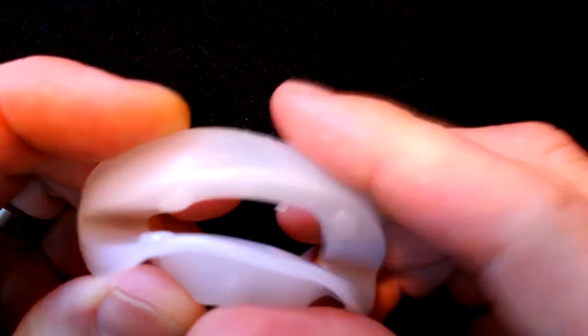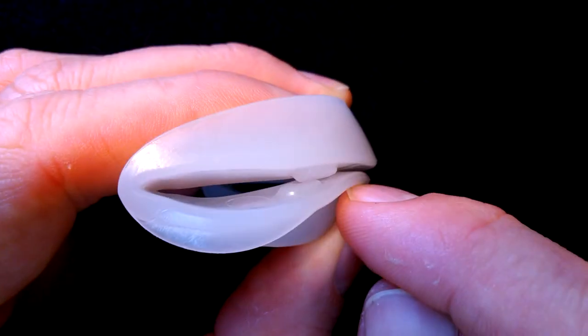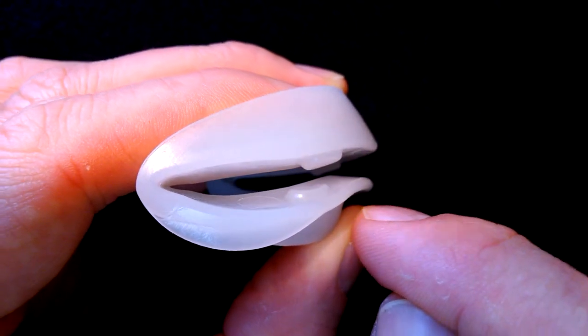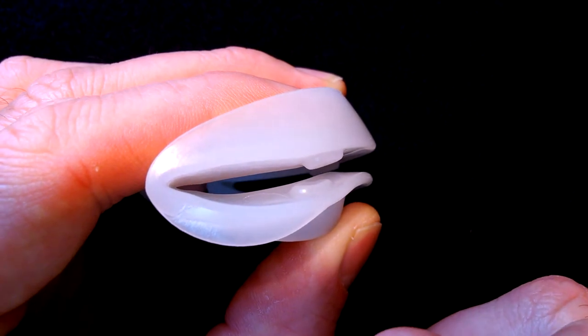This is the Snorermender, it's a mandibular advancement device, so instead of actually holding the tongue forward, it's going to hold the jaw forward, and that's going to tighten the airway and all the surrounding muscles, and that's going to prevent snoring.